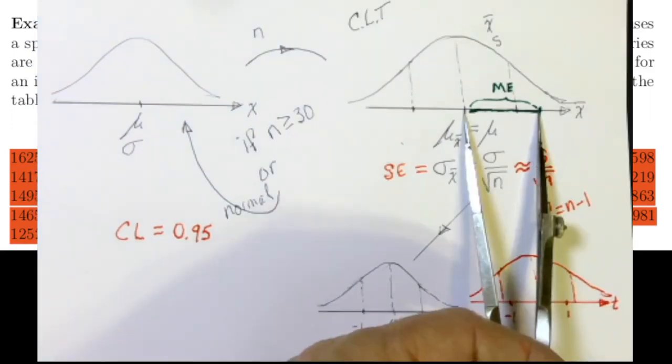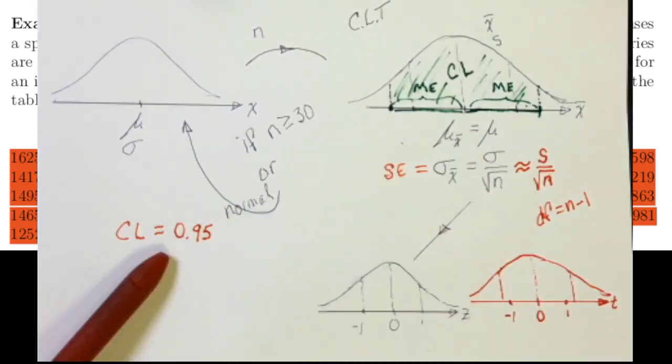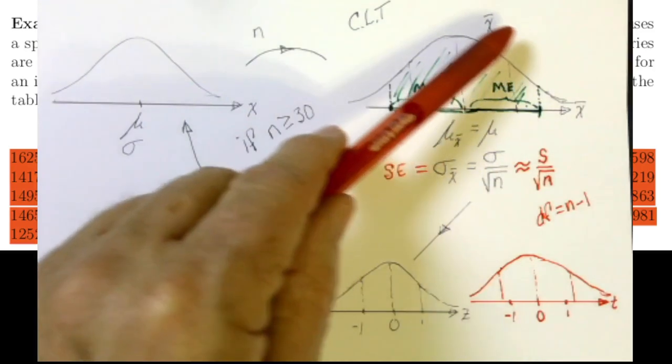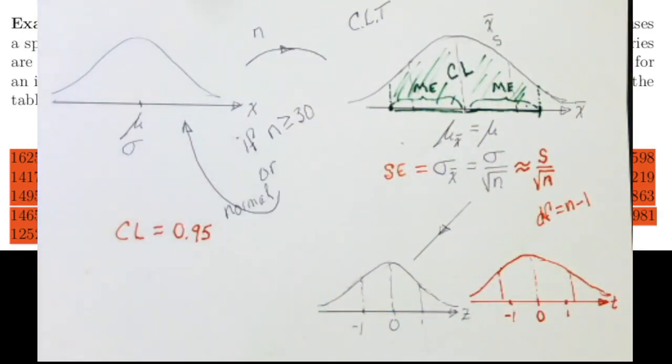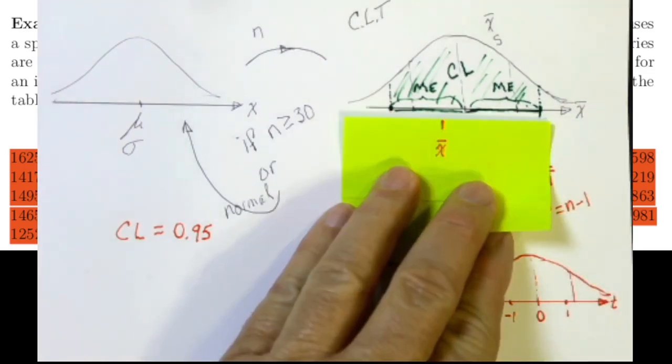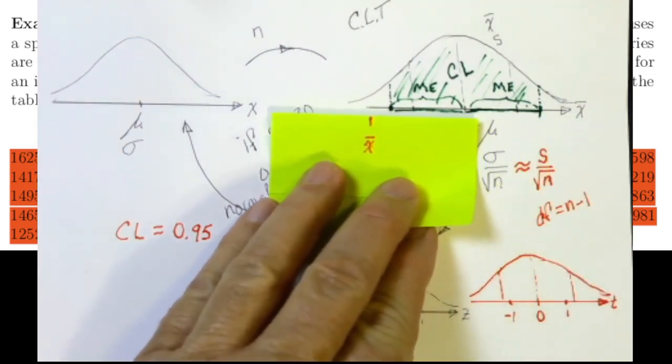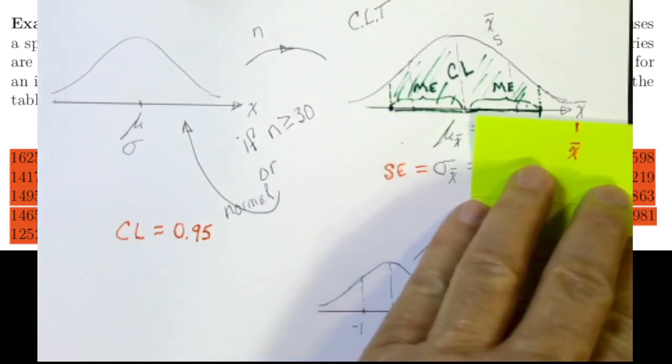The idea behind a confidence interval is knowing something about a margin of error. If we were able to create a margin of error about the mean so that 95% of this distribution was within that margin of error of the mean, then we would be 95% confident that our X-bar, the one that we got from our sample, lands in that interval. We don't know where our X-bar lands. It could be anywhere on this X-bar axis.